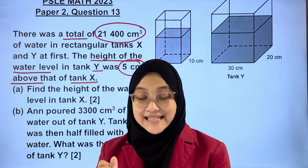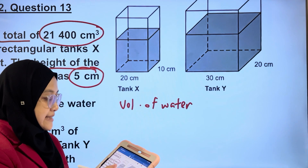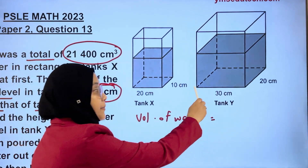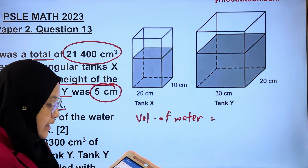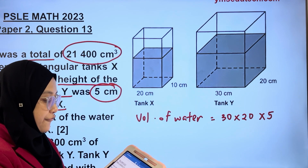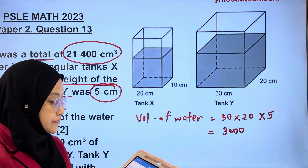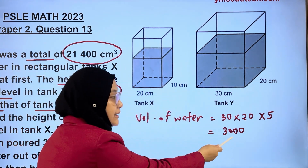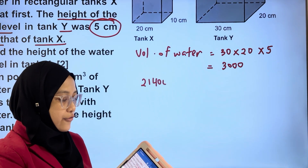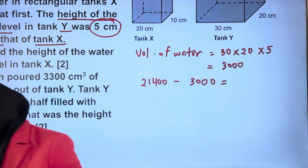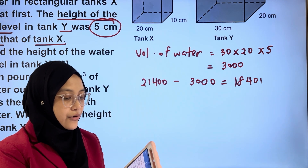Let's find the excess volume of water. Volume of excess water equals the base area of tank Y multiplied by the extra height of water in tank Y. That gives us 30 multiplied by 20 multiplied by 5. 600 multiplied by 5 gives us 3,000 cubic centimetres of water. We are going to subtract the total volume by the excess water present in Y: 21,400 minus 3,000 is 18,400 cubic centimetres.